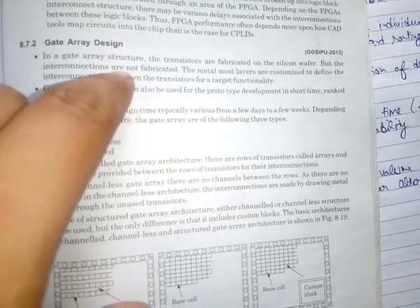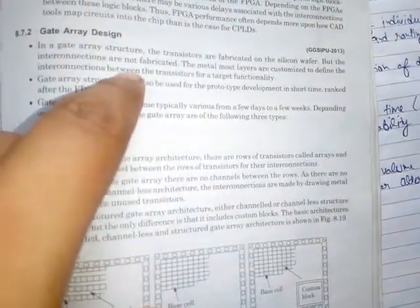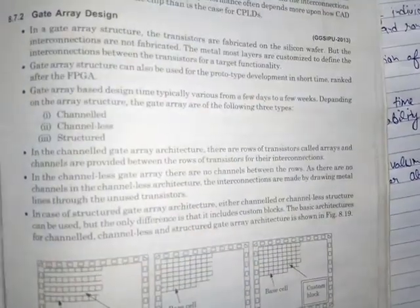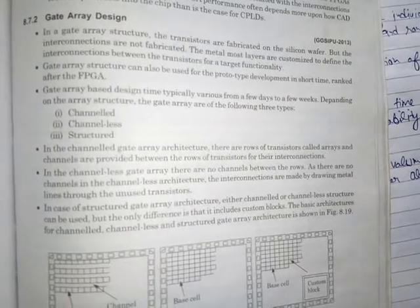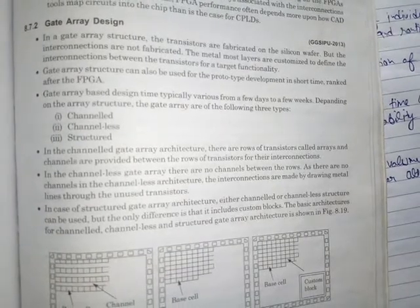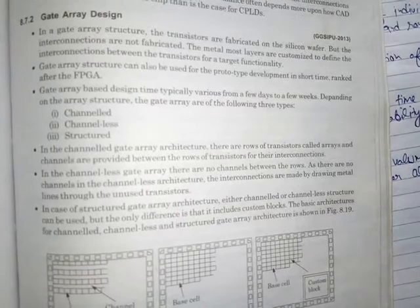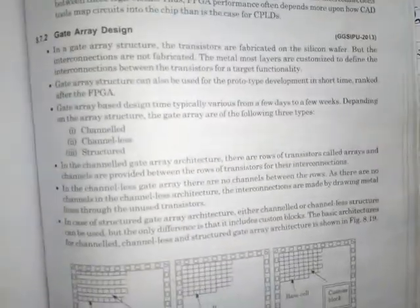In the gate array structure, transistors are fabricated on silicon wafer but interconnections are not fabricated. In the FPGA style we have seen that transistors as well as interconnections both were being fabricated, but in this design style only transistors are being fabricated on silicon wafer and interconnections are not fabricated.